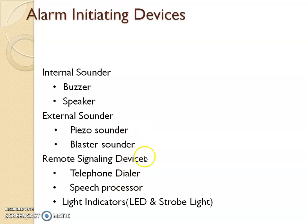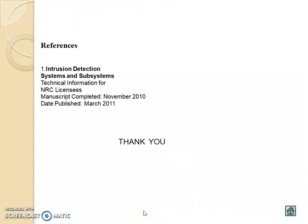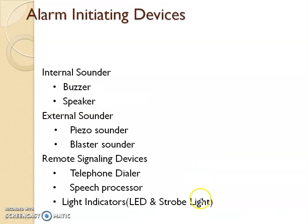The third type is remote signaling devices. Internal devices create noise heard inside the building. External devices create noise heard outside the building. Remote signaling devices do not create noise but give alerts to the owner or relevant people outside the building — such as a telephone dialer or speech dialer. There are also light indicators like LED and strobe lights. The purpose of strobe lights is for people who are unable to hear — they can see the strobe light and know that an alarm has been activated, similar to the strobe lights seen on ambulances or police vehicles. With this, I am completing the module. Thank you.